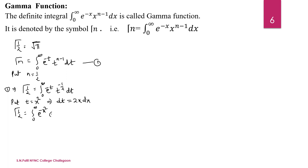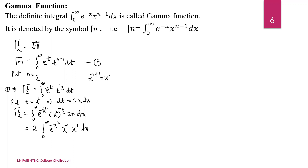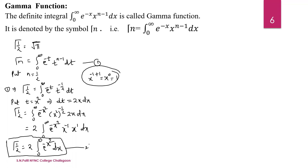The value of t is x squared to the power minus 1/2, and dt is 2x dx. The 2 is a constant. We get x to the power minus 1 times x to the power 1, which gives x to the power 0, equal to 1. So gamma of 1/2 equals 2 times the integral from 0 to infinity of e to the power minus x squared dx. Call this equation number 2.